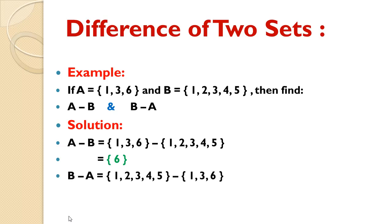Next, B - A: we write set B elements, difference sign, then set A elements. B difference A is the set of all elements of set B which are not elements of set A. Those elements are 2, 4, 5. So B - A = {2, 4, 5}.